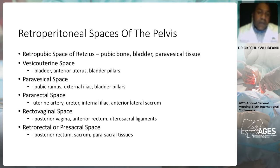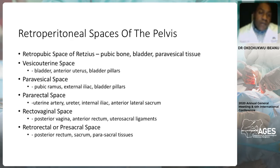For the rectovaginal space, the vagina is anterior, the rectum is posterior, and the uterosacral ligaments are lateral, running from the posterior vagina and uterus to the anterior rectum. The presacral space is bounded anteriorly by the rectum, posteriorly by the sacrum, and parasacral tissues on both sides.